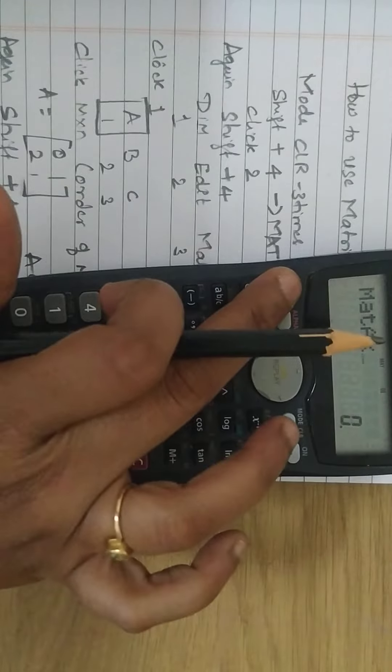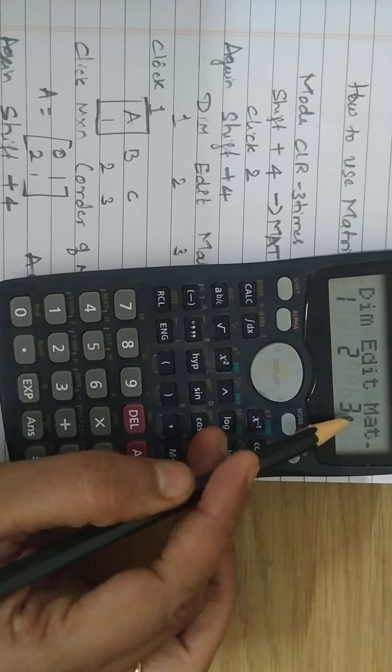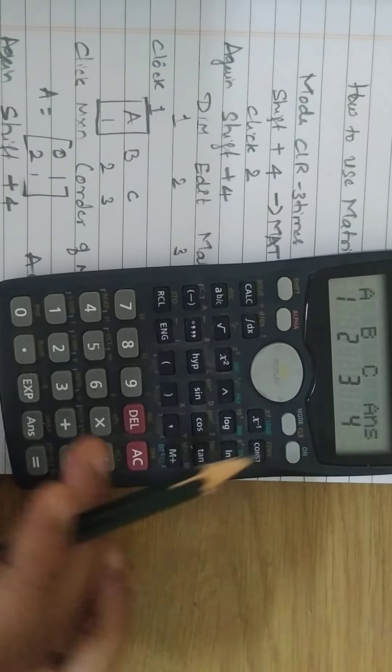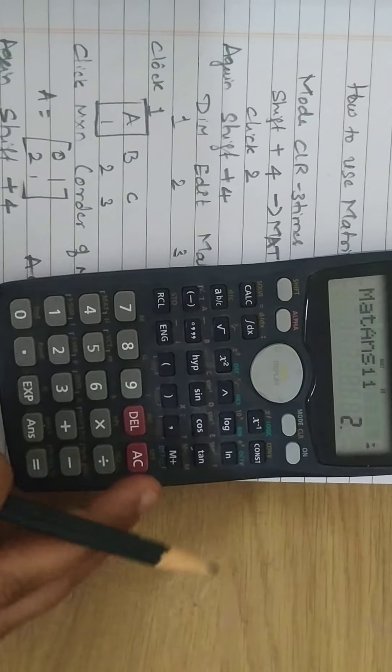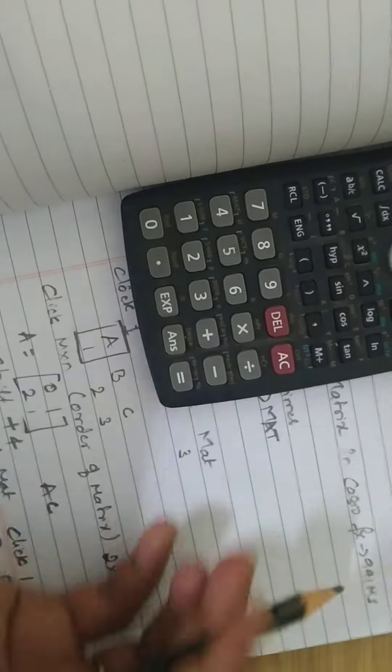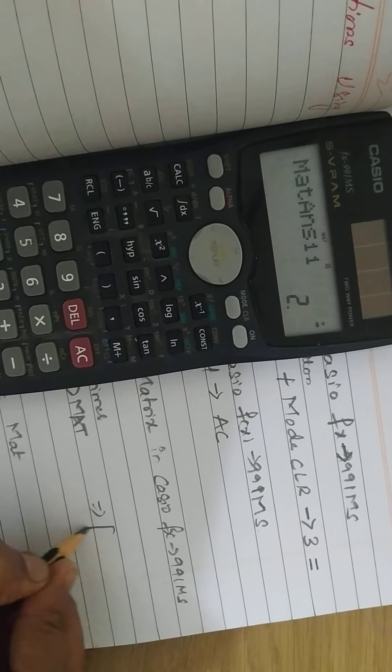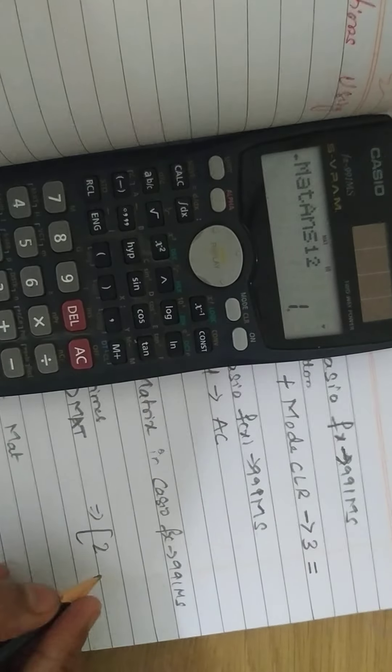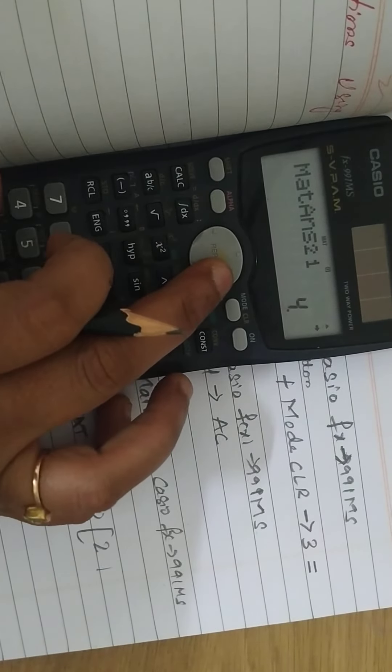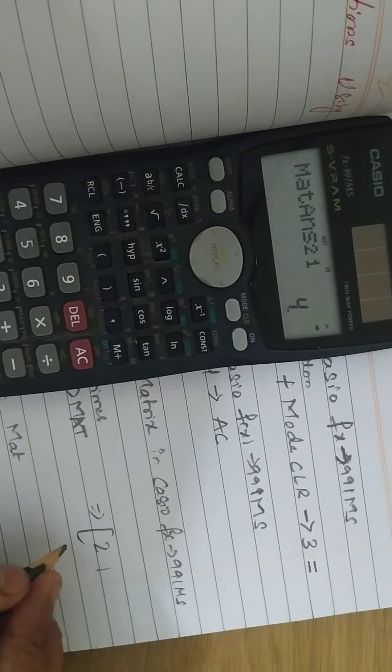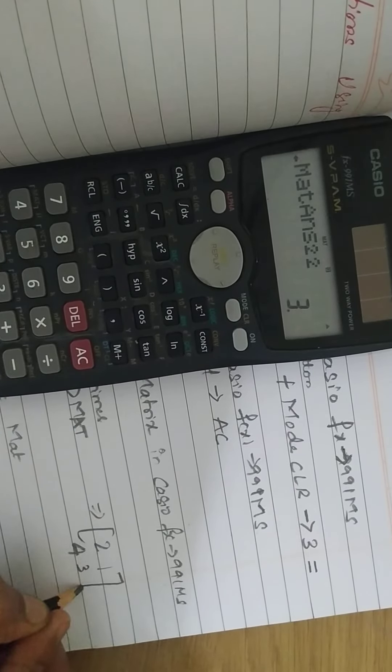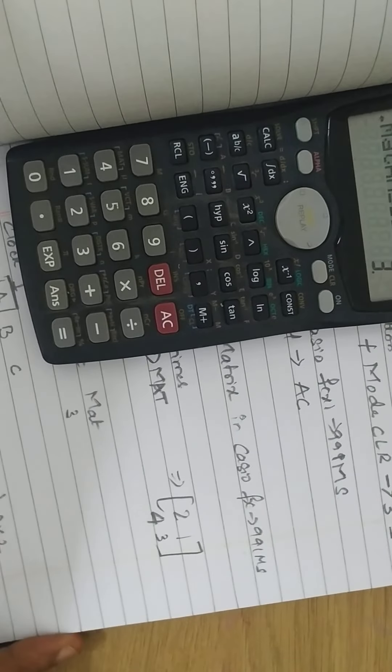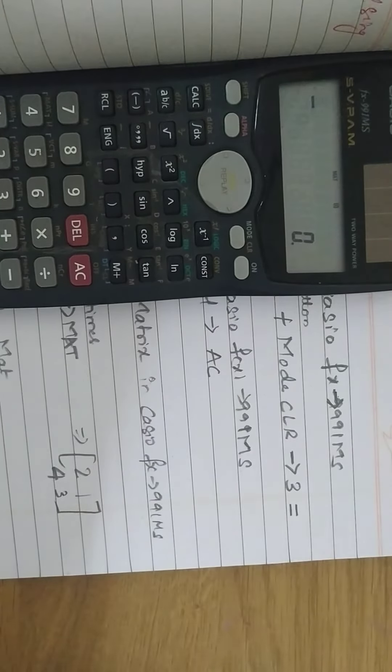Press shift 4, math function, select the second matrix, and click equal to. You will get the product of the two matrices displayed as 2, 1, 4, and 3 in the result matrix.